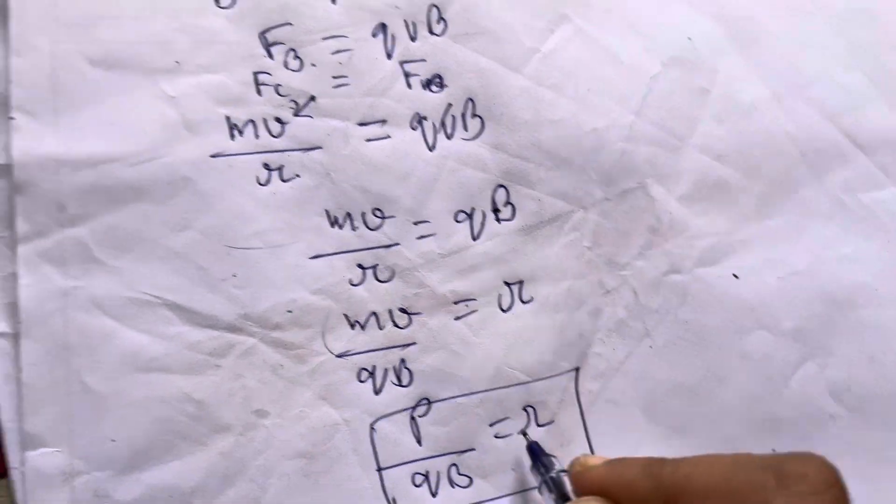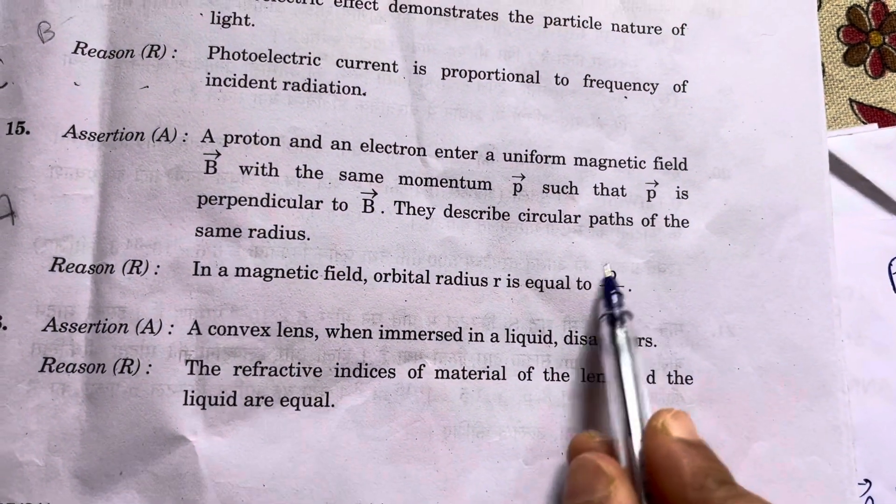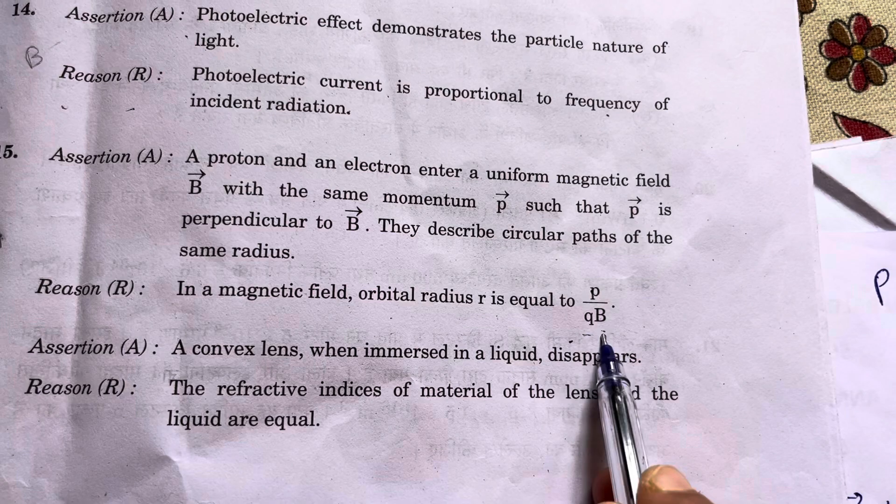So the radius of the path equals P by Q B.